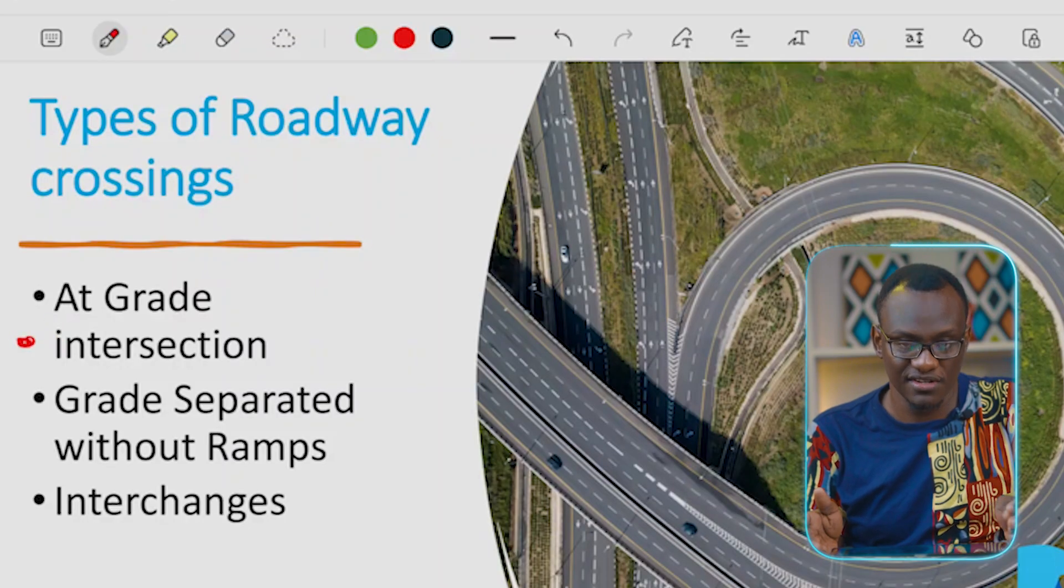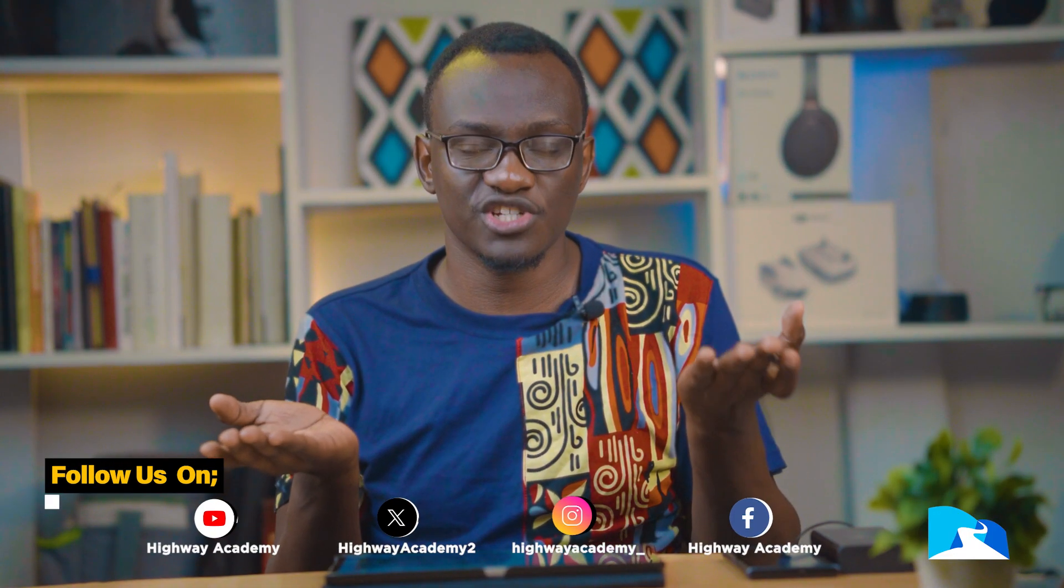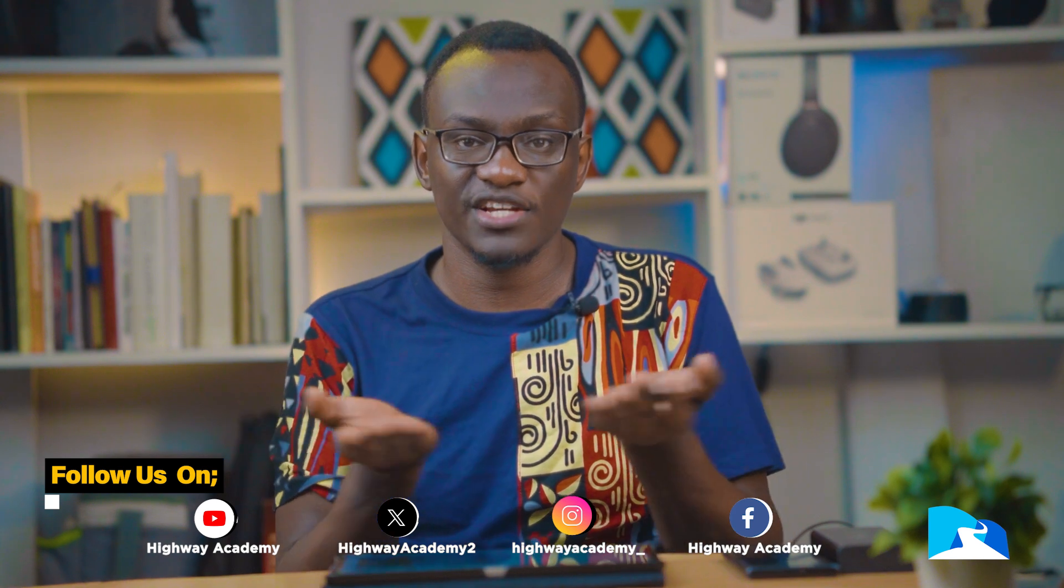Hello everyone and welcome to the second lesson. In this lesson we are going to be talking about the types and categories of junctions. So what are the types of roadway crossings? The first category is at-grade junctions. At-grade means the level is similar, so one junction in relation to everything, they are the same level.